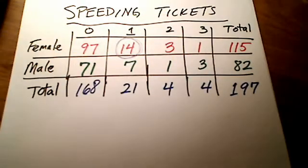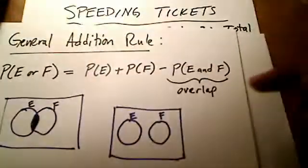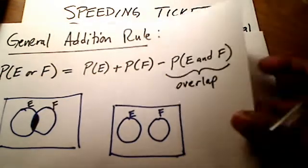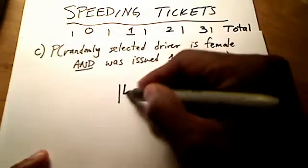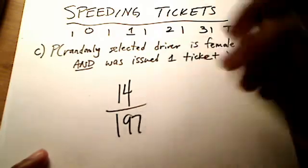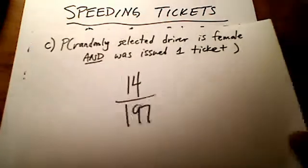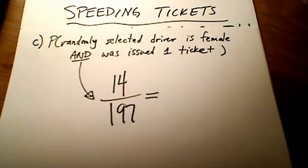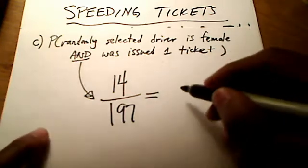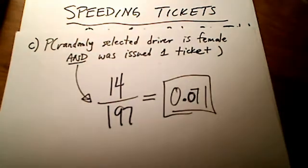So they intersect right here at 14. That's where they intersect, and that's what 'and' means. Remember from the general addition rule that 'and' means the overlap. So I'm going to put that 14 as our numerator and our total of 197 people altogether. 14 over 197 is my intersection, that's the 'and'. This comes out to be - if you round to three decimal places - 0.071.